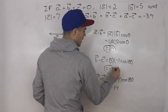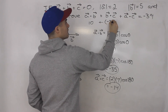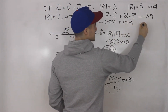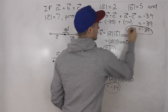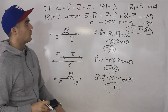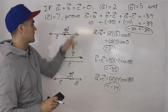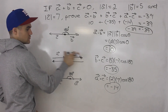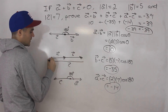So we got the three dot products. When we sum them all up — a dot b is 10, b dot c is negative 35, a dot c is negative 14 — we indeed get negative 39. So we proved this equation.